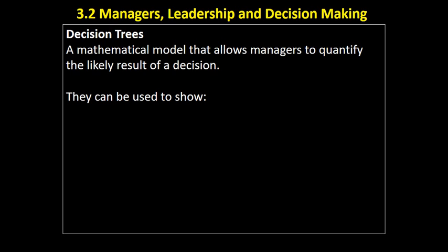A decision tree is a mathematical model that allows managers to quantify the likely result of a decision. When a manager or management team is making a decision, they will want to have some relatively solid financial data on which they can base their decision — if we do option A, what's going to be the total financial benefit? If we do option B, what's the total financial benefit? Let's see which one has the highest and then discuss other significant factors.